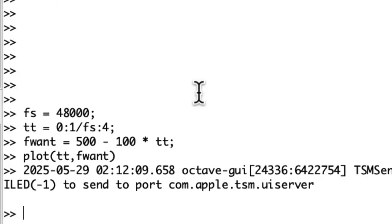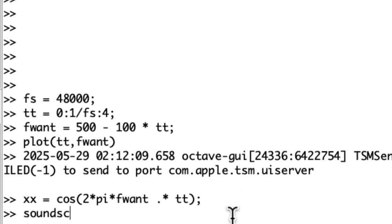Okay, so let's create a waveform x equals cosine 2 pi f1 times tt. And here f1 and tt are both vectors, so I need to have the period here. And now let's listen to it.